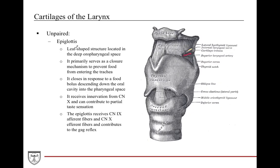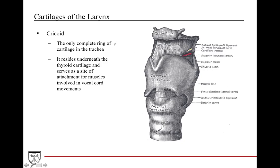The unpaired epiglottis is a leaf-shaped structure located deep to the oropharyngeal space. It serves as a point of closure to prevent food from going down into the trachea, closing involuntarily in response to the food bolus to protect the trachea. It receives innervation by the vagus and contributes minimally to taste sensation. The epiglottis also receives sensation via the glossopharyngeal nerve above and the vagus nerve with afferent fibers to help elicit the gag reflex. The cricoid cartilage is unique because it is the only complete ring of cartilage in the trachea — a full 360 degrees — residing right underneath the thyroid cartilage, and it is an important site for attachment of muscles involved in vocal cord intrinsic movements.